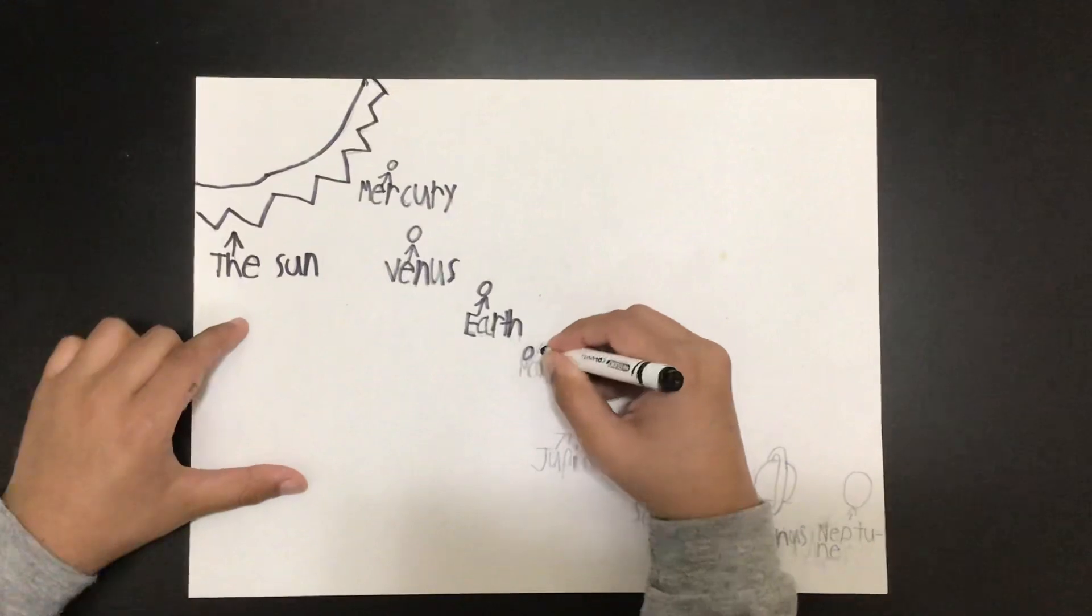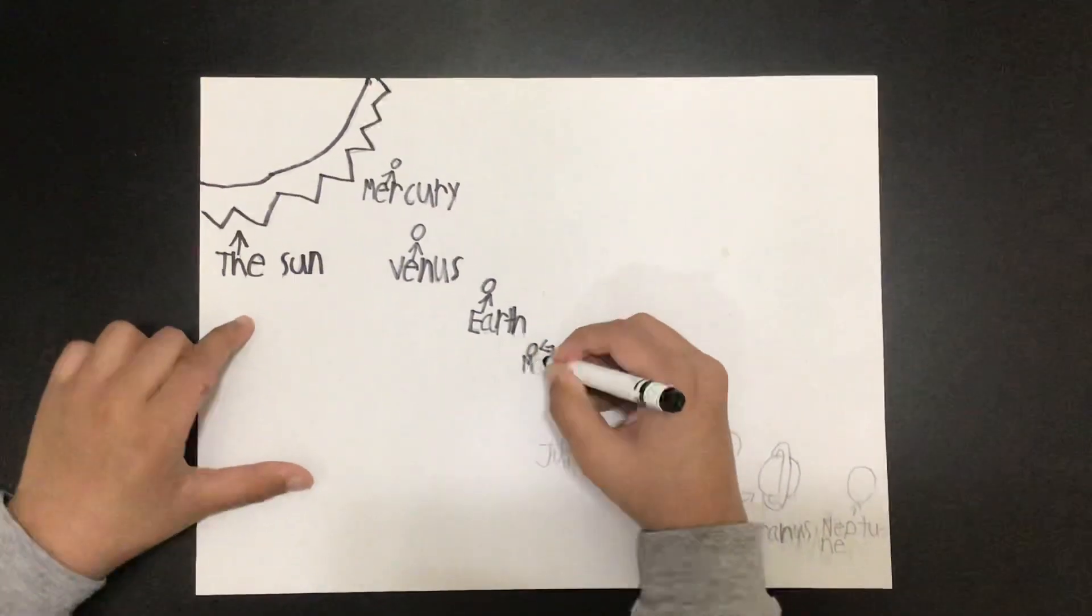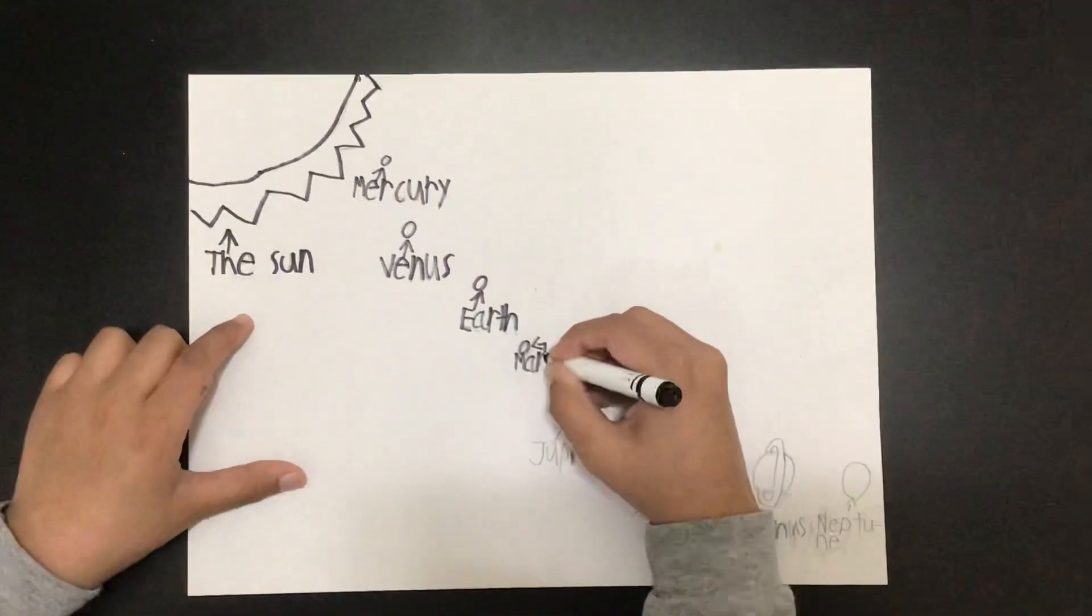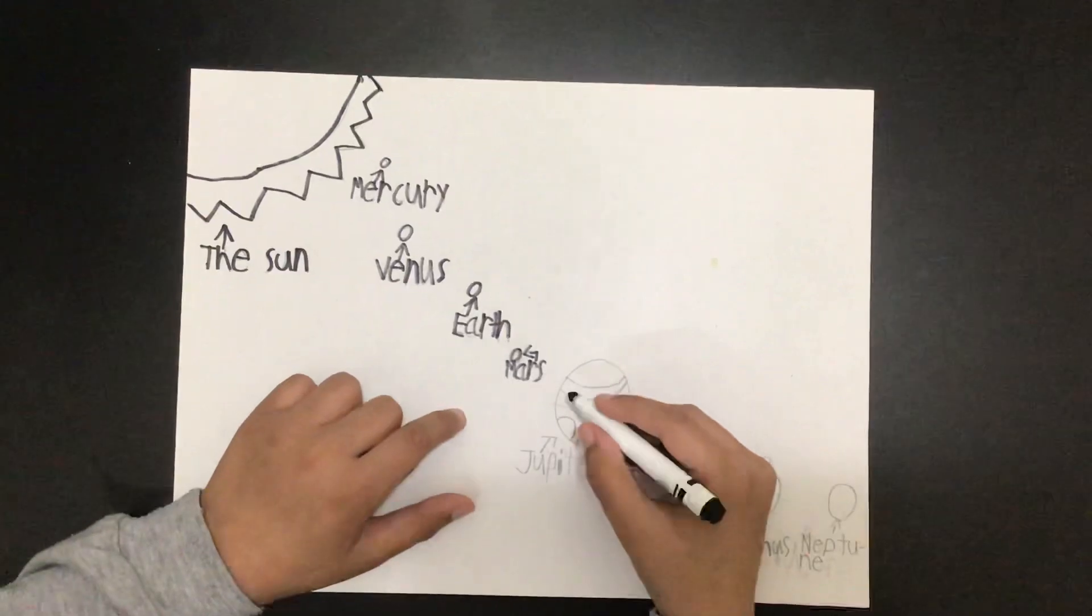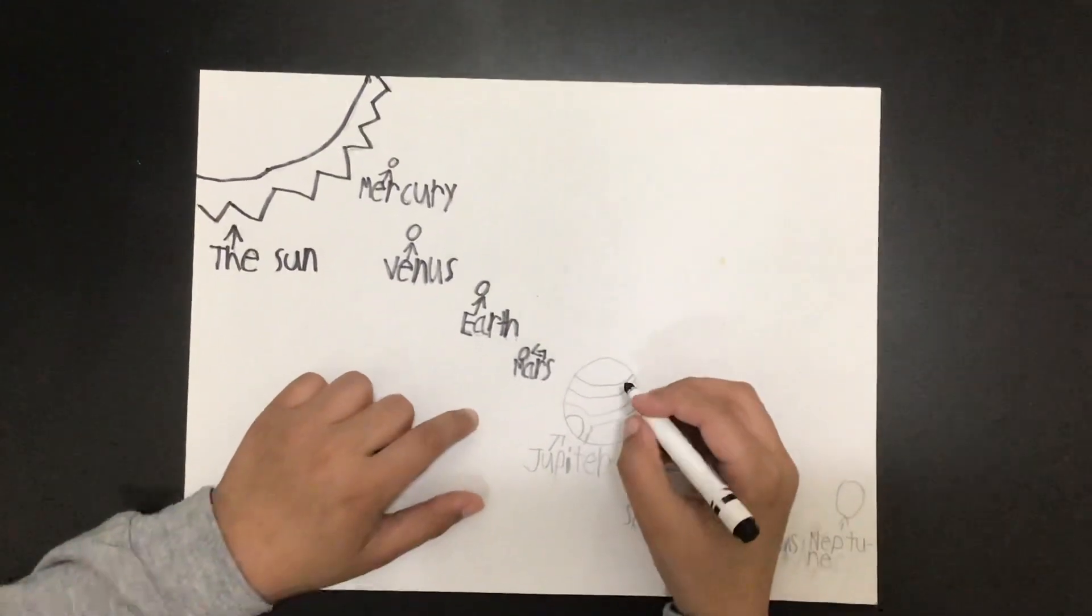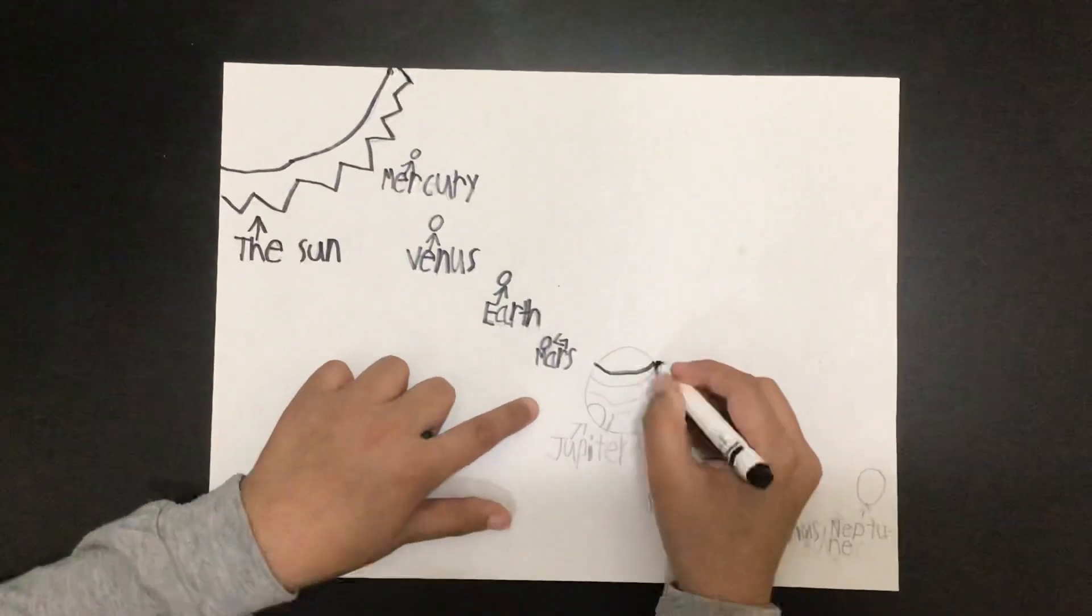It means that life could live there. This is the fourth planet, Mars. It is the second smallest planet in the solar system. It is also called the red planet.